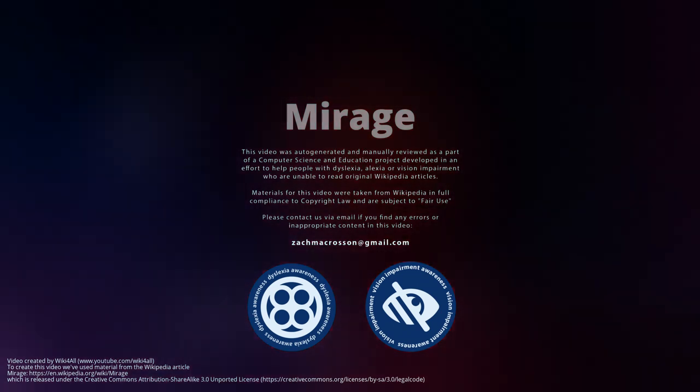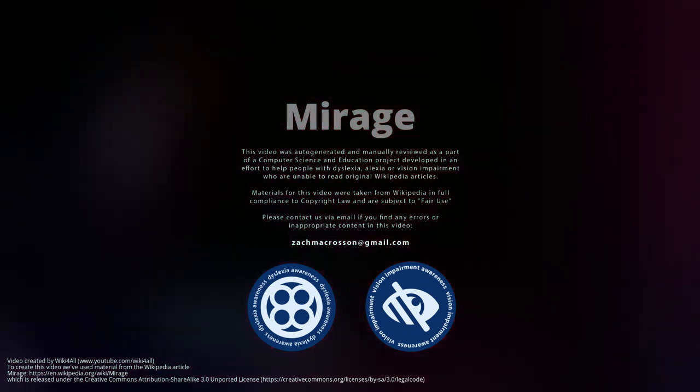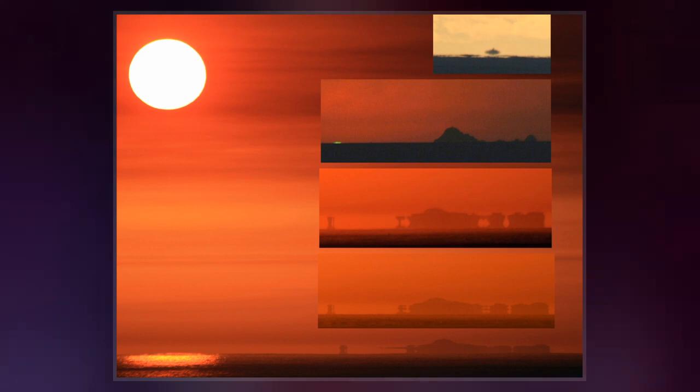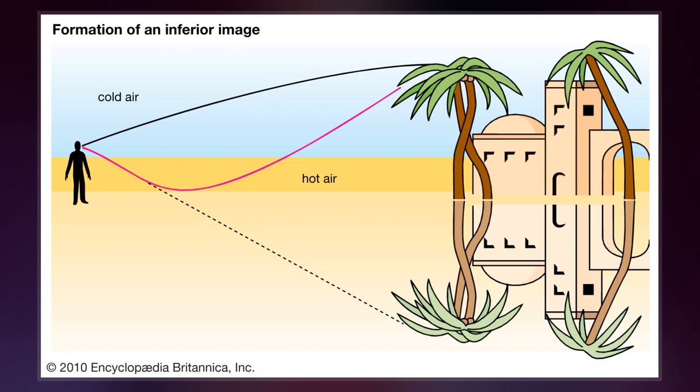The mirage is a naturally occurring optical phenomenon in which light rays bend via refraction to produce a displaced image of distant objects or the sky. The word comes to English via the French mirar, from the Latin mirari, meaning to look at, to wonder at.